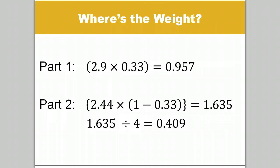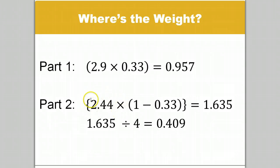So you might be asking where the exponential part of it is. If we break it down, we can see that the current day's data, 2.9, has a weight of 0.957. If we look at the previous four days of data, we see that each one, using just a simple average, would only have a weight of 0.409. A simple average would apply the same value to the four days, but in reality the 1.635 is distributed over the four days proportionately based on time. Remember that the previous day's EMA already applied the weight based on time.